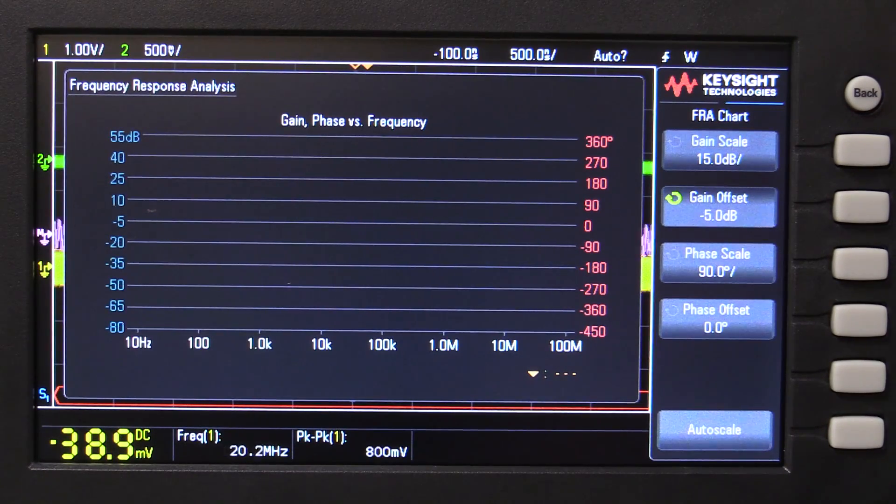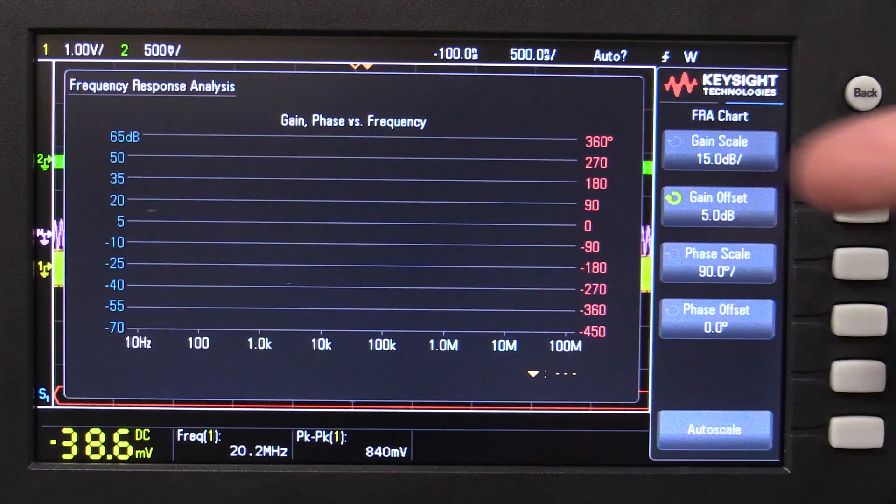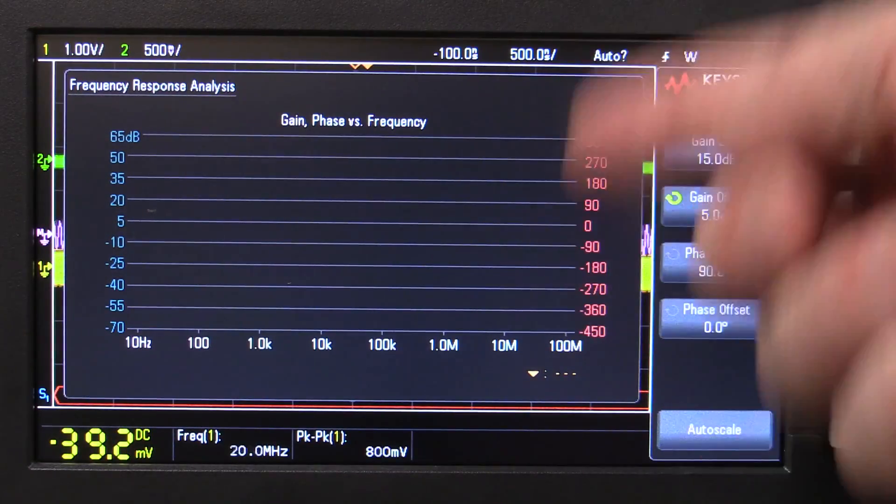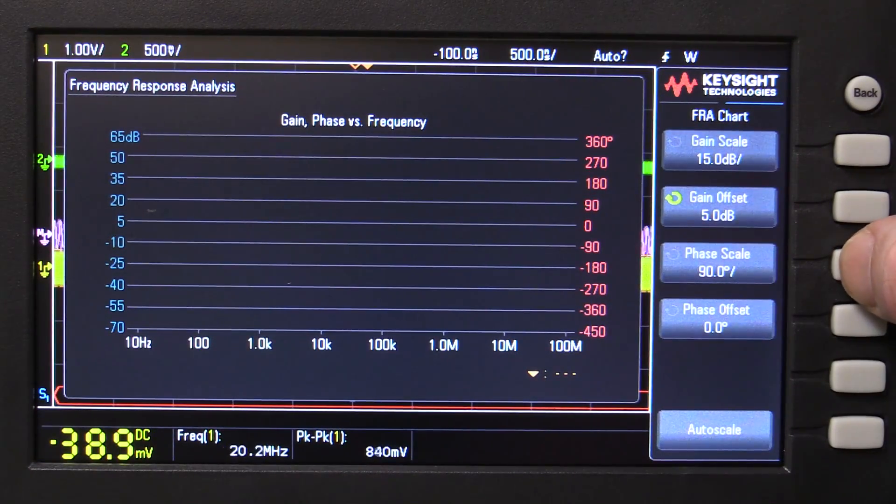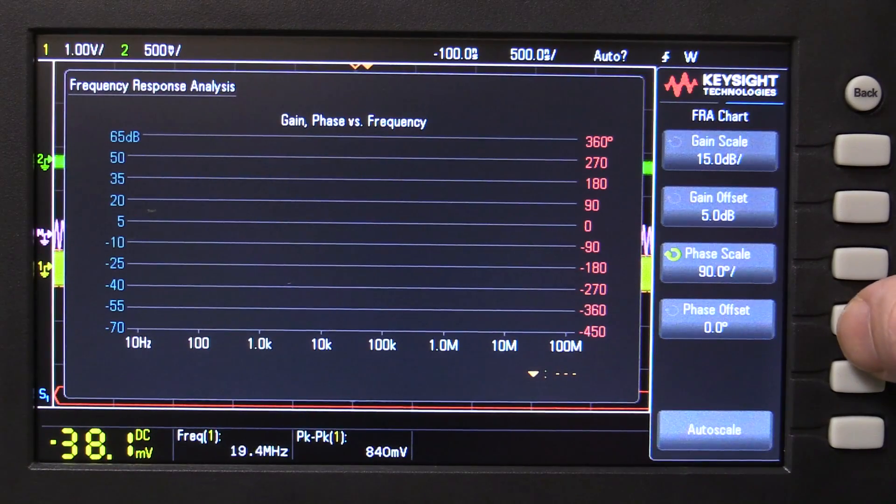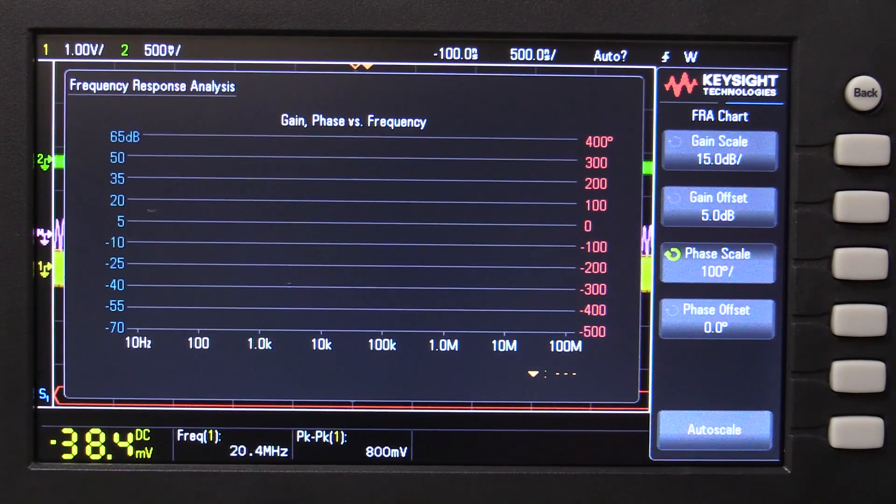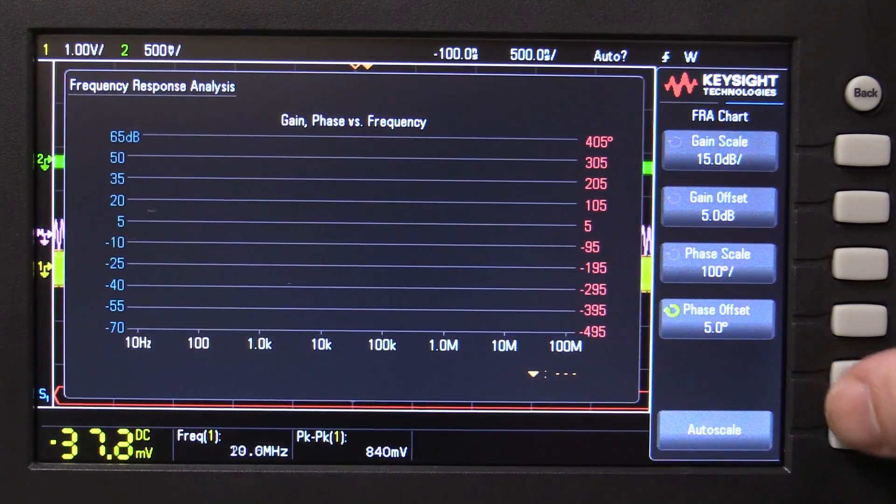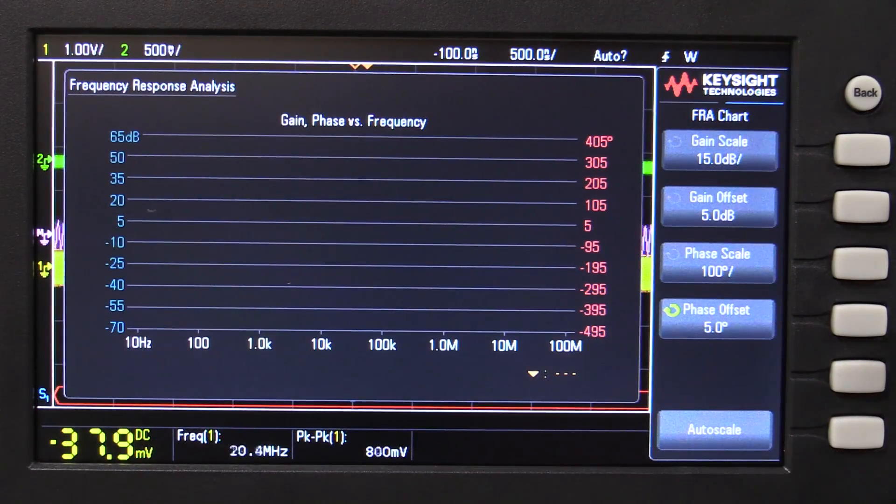In dB of course. That's in what? 5 dB steps. Yeah, that's usable. Gain offset. Once again, that's in 5-10 dB steps, 5 dB steps. So that we can, that'll move it up and down. And we can do exactly the same thing with the phase scale as well. That's in 5 degree increments. Phase offset, yep, 5 degrees. Beauty. And we can just auto it. Let's give it a burl.